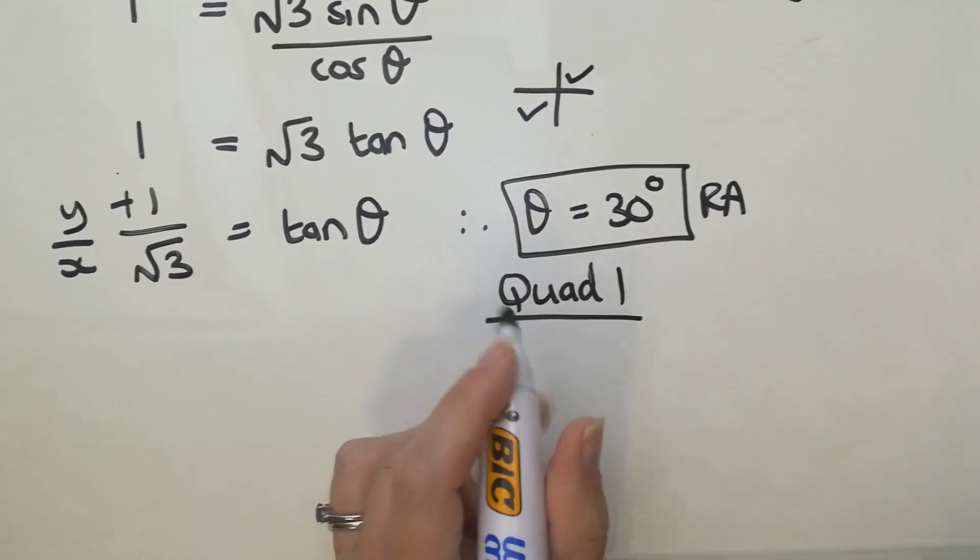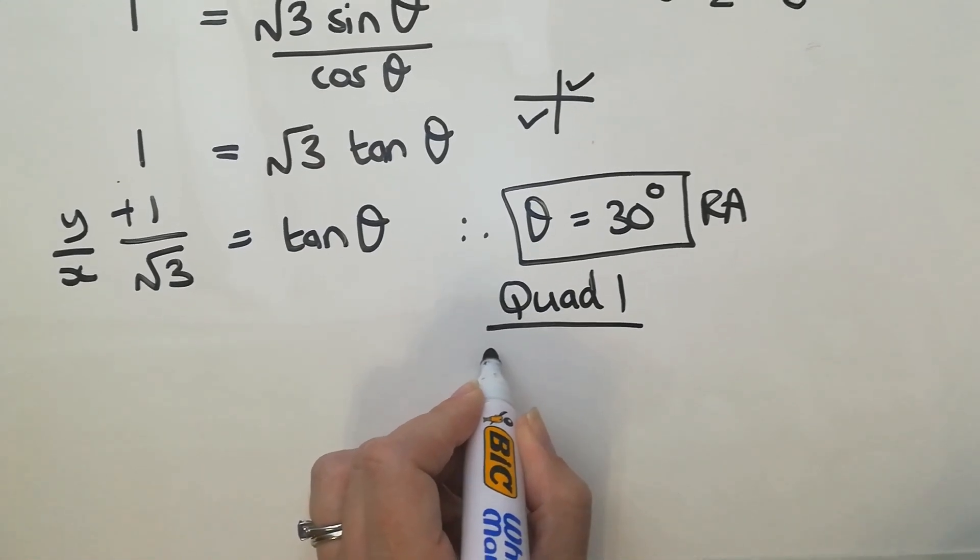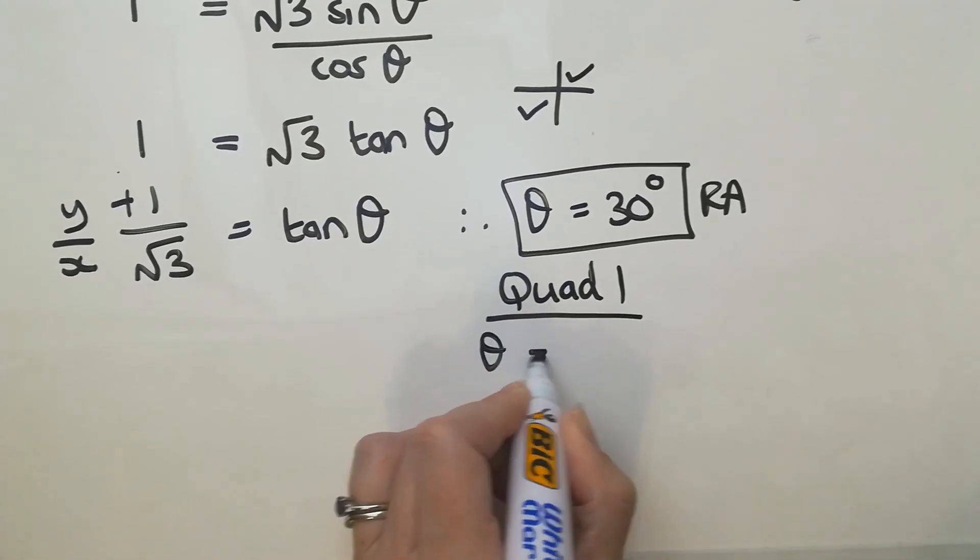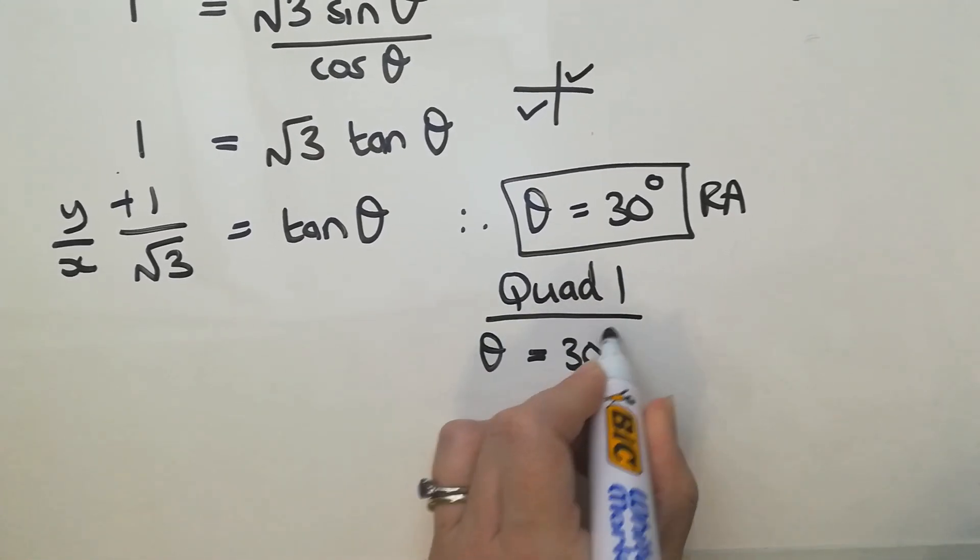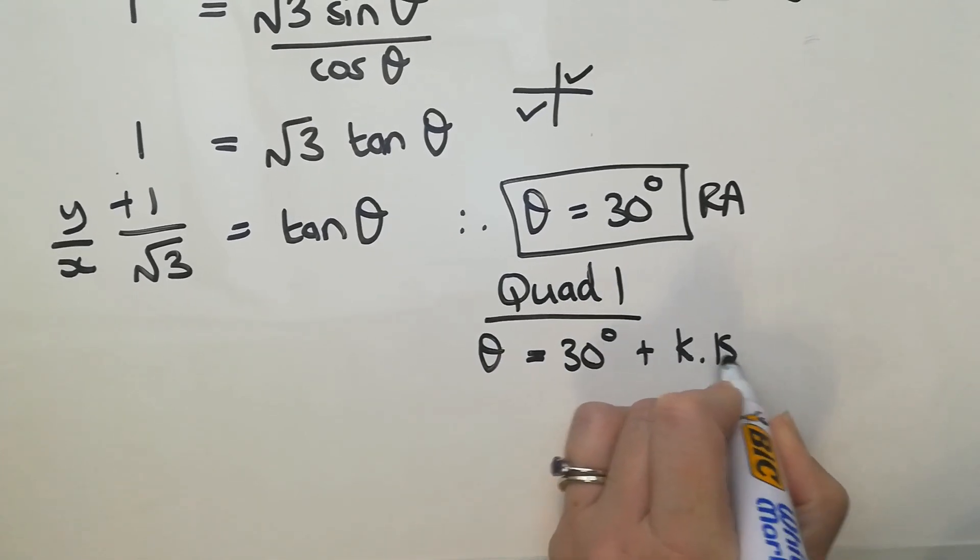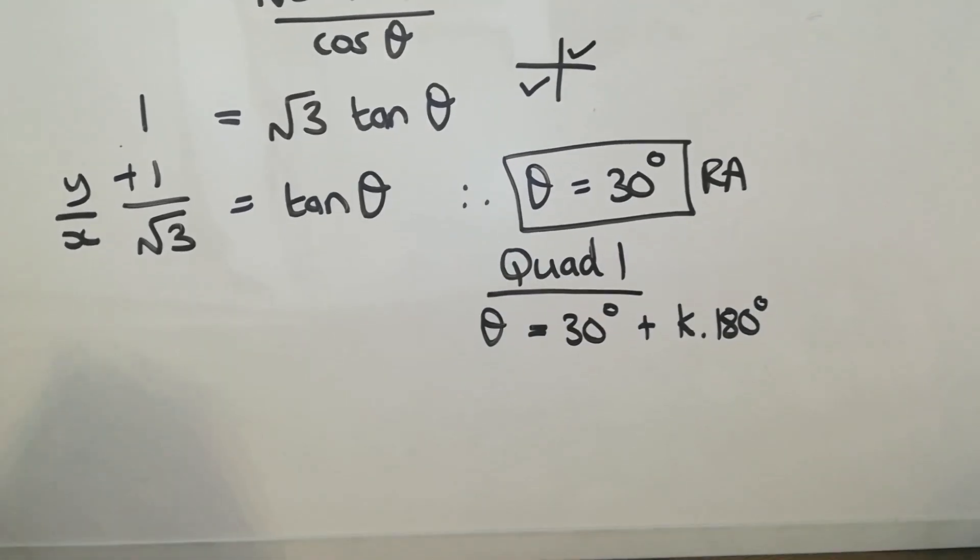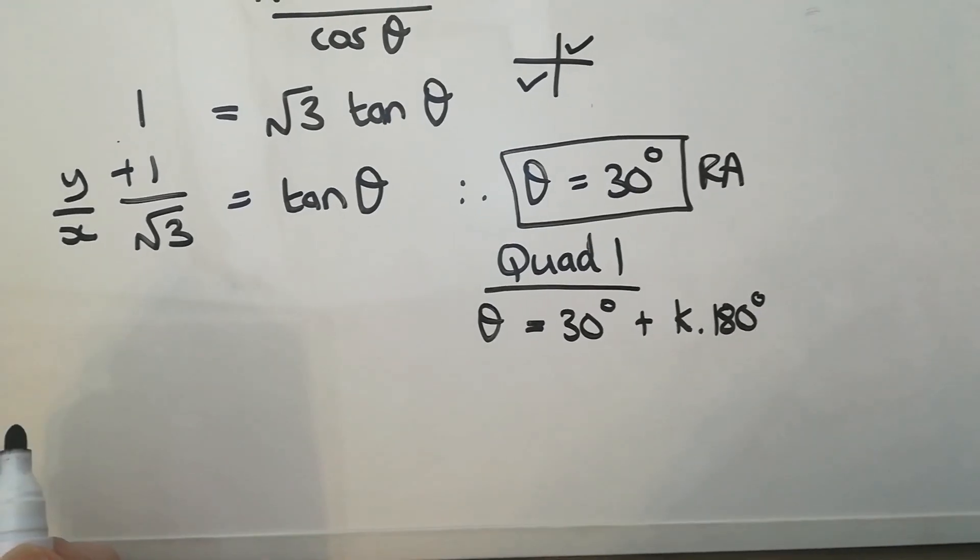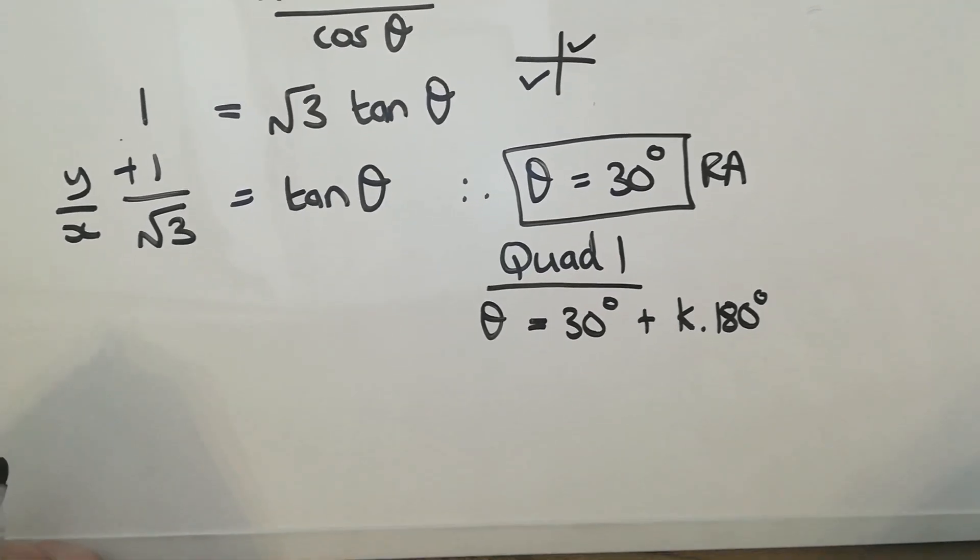Okay, so now I'm going to say in quad 1, theta equals 30 degrees plus k 180. Because I'm dealing with tan, so it's k 180 instead of k 360. Okay, so k 180.